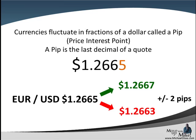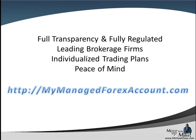In our next installment, we're going to talk about lots, which will help you put value to how much a PIP is worth — it depends upon how much you invest. But first you have to understand how to calculate the value of a quote, and typically it's the last decimal in a quote. The majority of quotes you'll see have four decimals; there are two that only have two, and we'll talk about that more in our fourth installment, What is a Lot. We hope this helps you understand basically what a PIP is — looking at that fourth decimal in a quote, and as it rises and goes down, that's how we make money. Thanks, guys, and I'll see you next time.